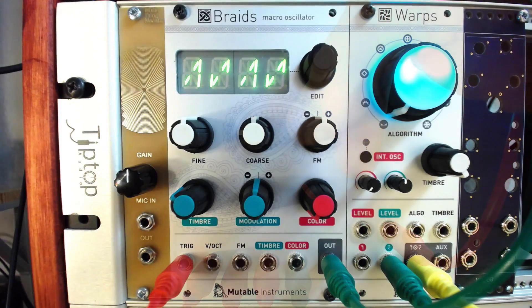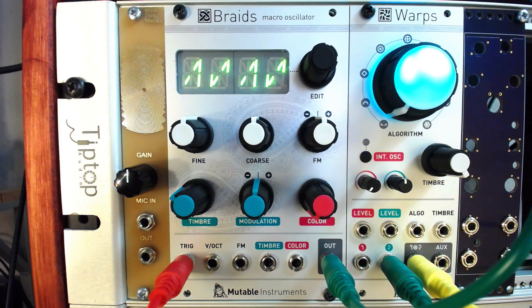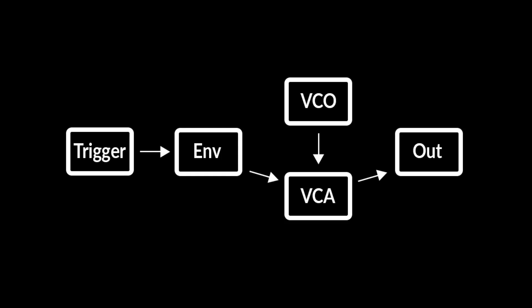Braids is an incredibly detailed digital oscillator with a number of useful features for our purposes, like a built-in attack decay envelope and VCA, among other things. Let's start by enabling these two features since they are both instrumental in getting percussive sounds.